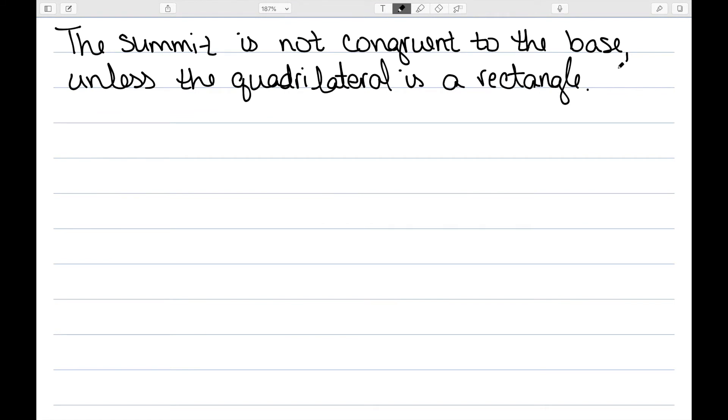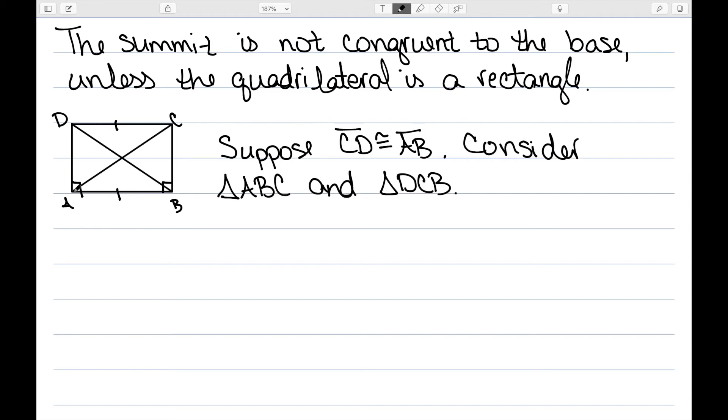The next thing I want to show is the summit is not congruent to the base, unless the quadrilateral is a rectangle. In order to show this, let's suppose that the summit and the base are congruent, so AB and CD are congruent. And then we need to show that angle C and angle D must be right angles. I now want to consider the triangles ABC, so this one on the bottom right, and DCB, this one at the upper right. We know that side AB is equal to CD by assumption. We also know side BC is congruent to side CB by symmetry.